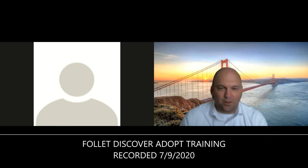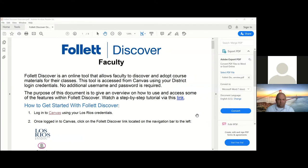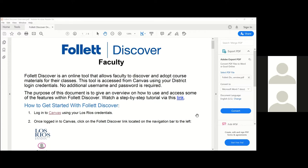This is the Follett Discover for Faculty PDF that should have been sent out to all faculty. It's an overview of the online system where you can place your textbook adoption. This is just one of the places where you can submit a textbook adoption — you can also email the bookstore, call the bookstore, or once everything opens back up, visit the bookstore and meet your new textbook and store managers.